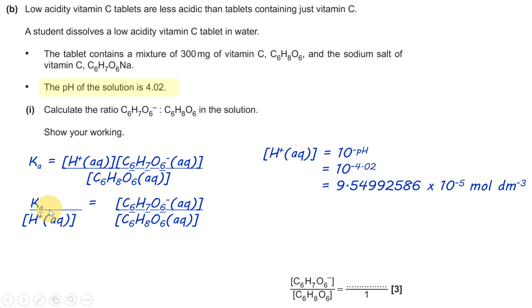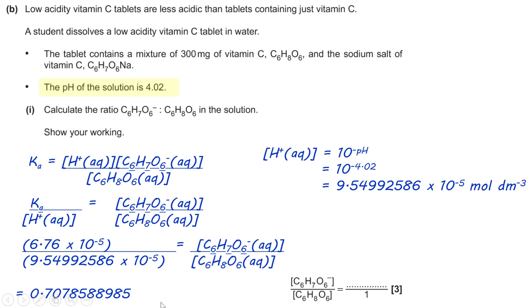So, that's what the question asks you to find out. You can plug the numbers into here, which gives you 0.07078588985, and to three significant figures. That's 0.0708.